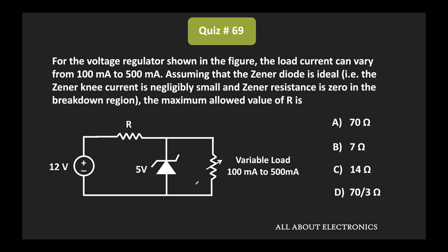That means the Zener knee current is negligible, and the Zener resistance of the Zener diode is almost zero.